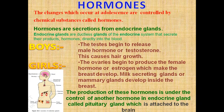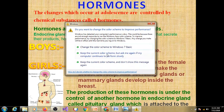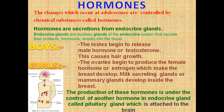Hormones are the secretions which are secreted from the endocrine glands. These endocrine glands are ductless glands and they secrete chemical substances called hormones, which are directly poured into the blood. As we are studying about adolescence, we are more concerned about the sex hormones, or the hormones produced by the reproductive organs.